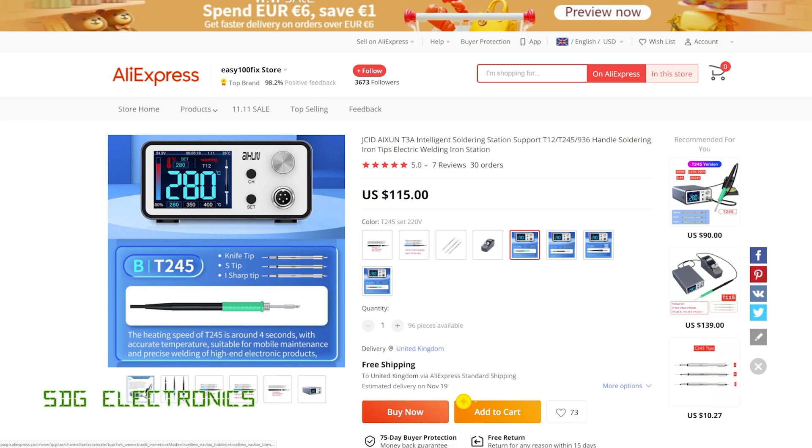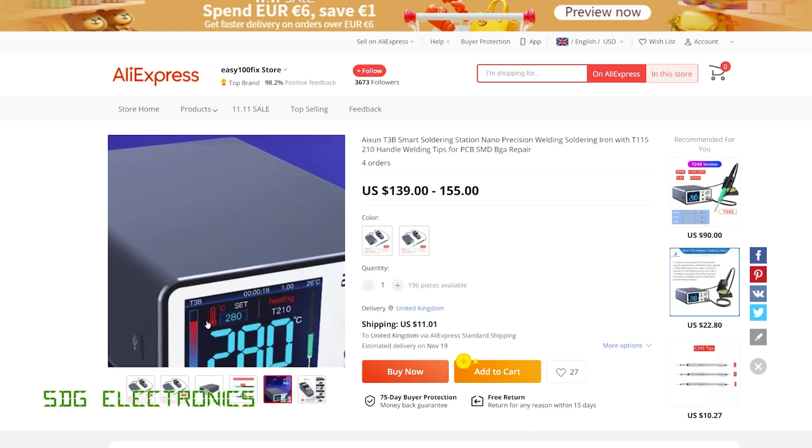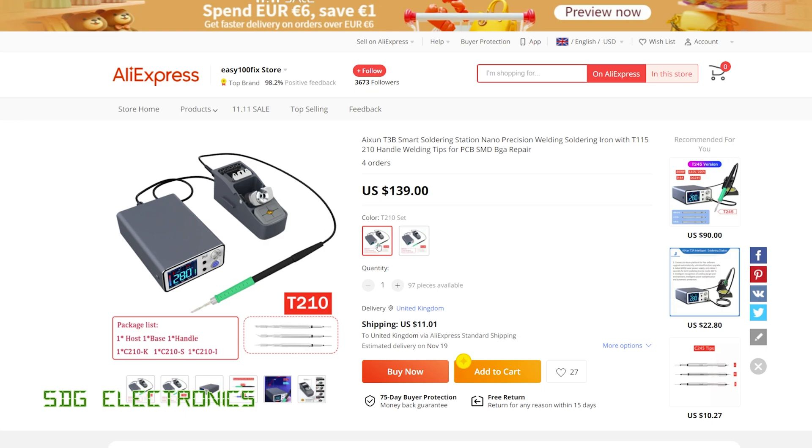However, when I was looking around, I did also notice they've released the T3B, which is a very slightly different version of the station itself. There's two versions available. There's one for the T210 handpiece, which is a slightly smaller one than the 245. And they've also got one for the micro cartridges, the T115.